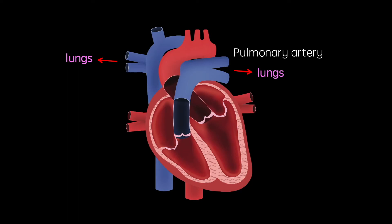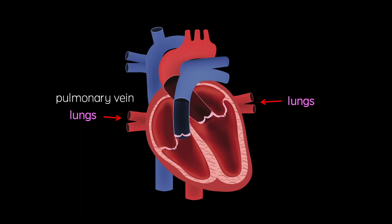This oxygenated blood re-enters the heart via the pulmonary vein and enters the left atrium. When the left atrium contracts, the mitral valve is forced open and the blood flows into the left ventricle. When the left ventricle contracts, the aortic valve is forced open and blood flows through the aorta. This carries blood to the entire body, where it delivers the oxygen.